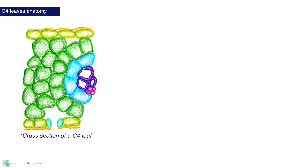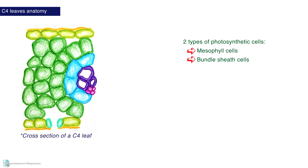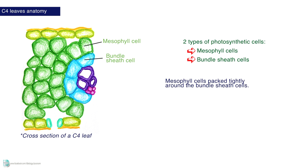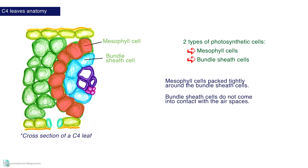In the leaves of C4 plants, there are two types of photosynthetic cells: mesophyll and bundle sheath cells. Mesophyll cells pack tightly around the bundle sheath cells. Bundle sheath cells do not come into contact with the airspaces.